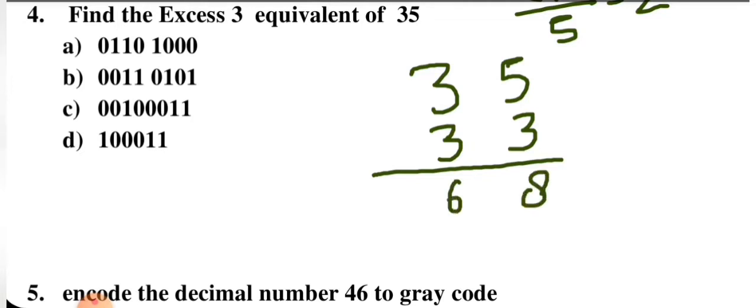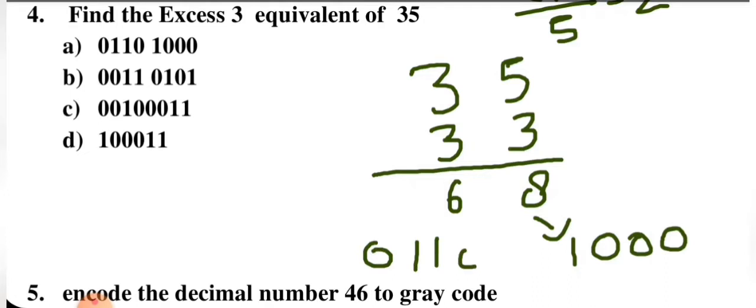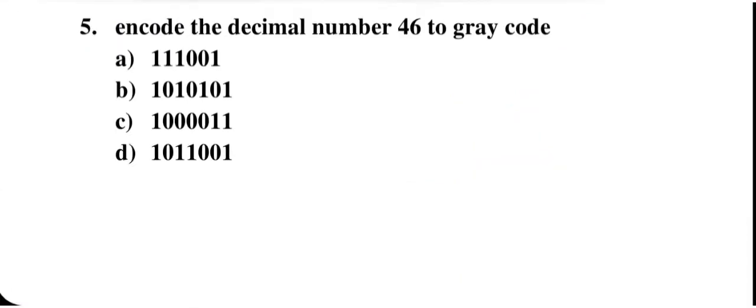So we get 8 and 6. In binary, 8 is written as 1000 and 6 is written as 0110. Matching the options, option A is correct: 0110 1000.